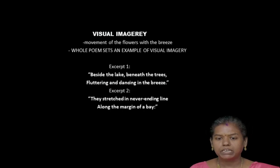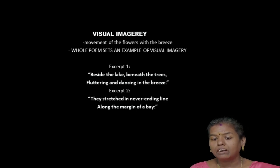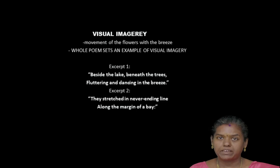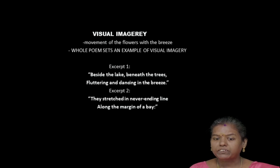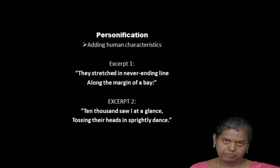We also have visual imagery — the whole poem is an example of visual imagery, a visual treat of the movement of the flowers with the breeze. 'Beside the lake, beneath the trees, fluttering and dancing in the breeze' — you can very well imagine those scenes in your mind and get a vivid picture of the daffodils. 'They stretched a never-ending line along the margin of the bay' — you can imagine a bright yellow line of daffodils along the bay.